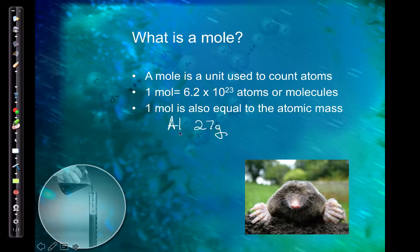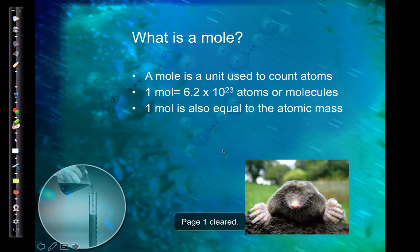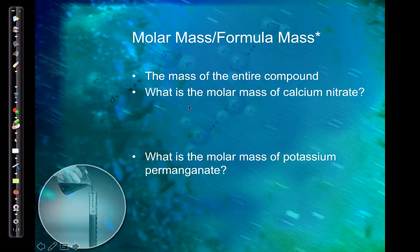If I have a mole of copper, that would be about 63.5 grams. So if I go weigh that amount of copper, I have a mole of copper, which is also 6.02 times 10 to the 23rd atoms of copper. So if we are looking for the molar mass of a compound, we need to just add up the mass of all of the atoms.